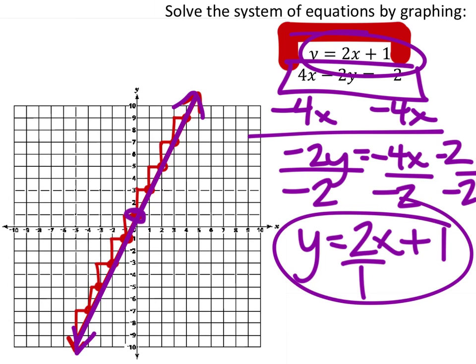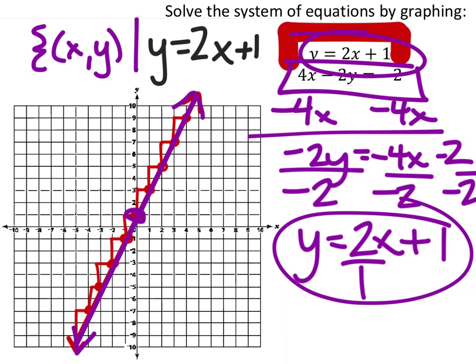So in a system of equations, technically we would write the answer as a set where we're going to use the x and y values. And then we just write the equation, which would be y equals 2x plus 1, and then we close the set.